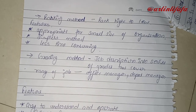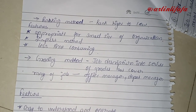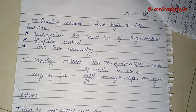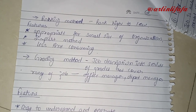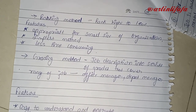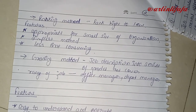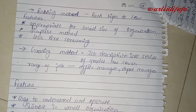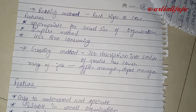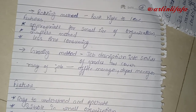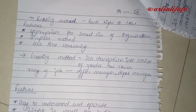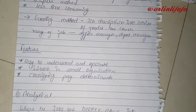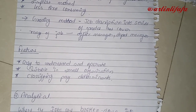Under the non-analytical method, we have two methods: the ranking method and the grading method. In the ranking method, jobs are ranked from high to low. Its features are: first, it is appropriate for small-sized organizations; second, it is the simplest method; and third, it is least time-consuming because we can easily find out which job has a high rank and which has a low rank.